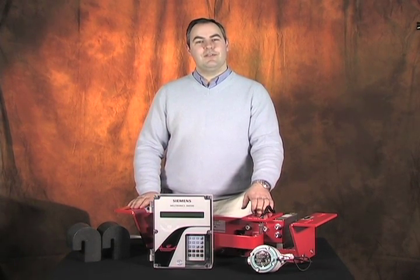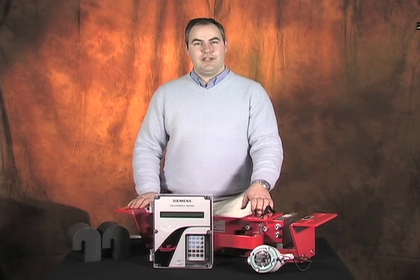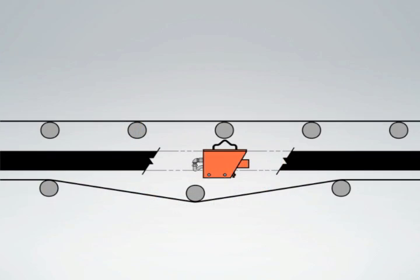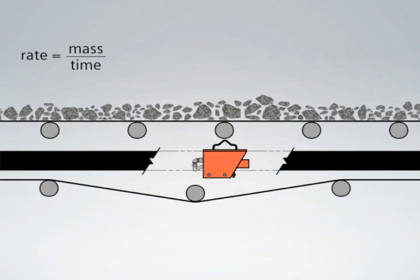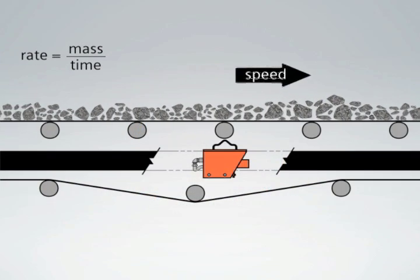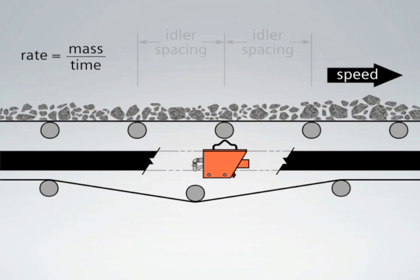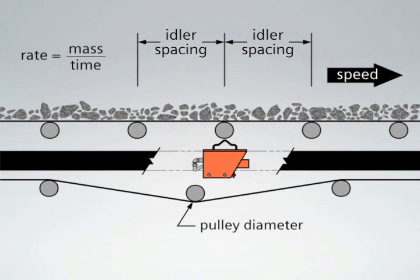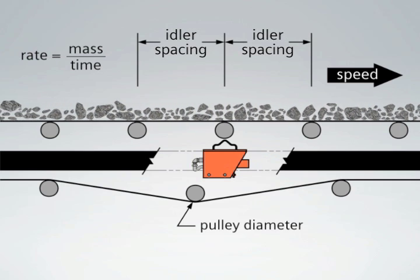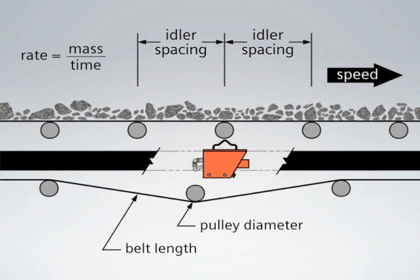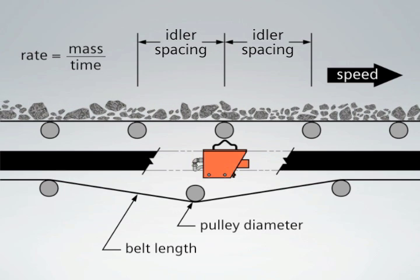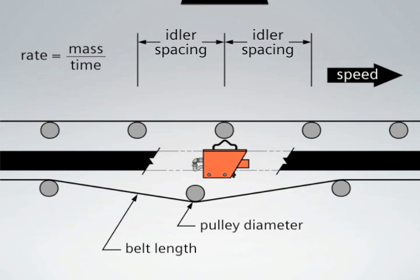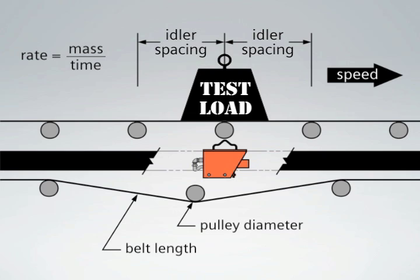First we need to ensure we have the following application information: the conveyor feed rate or design rate, the design speed of the conveyor, the idler spacing where the belt scale is located, the diameter of the pulley that will drive the speed sensor, the total length of the conveyor belt, and the test load value — which is the total mass of the calibration weights.